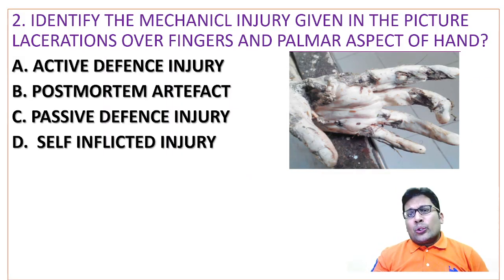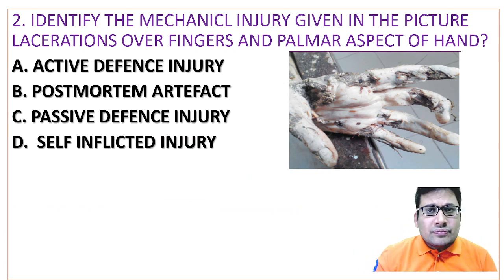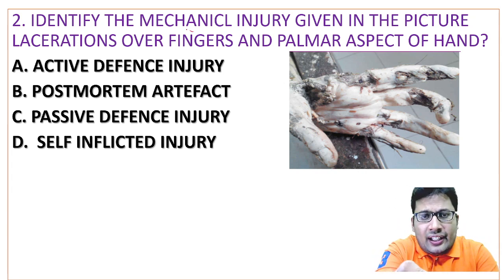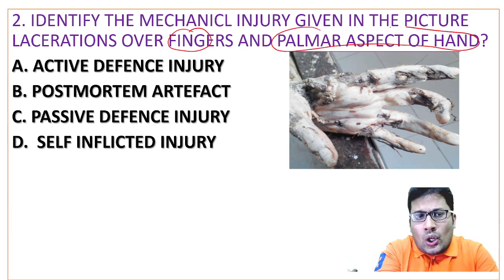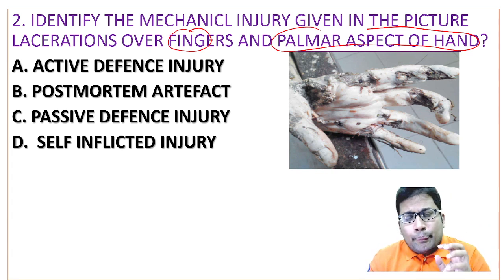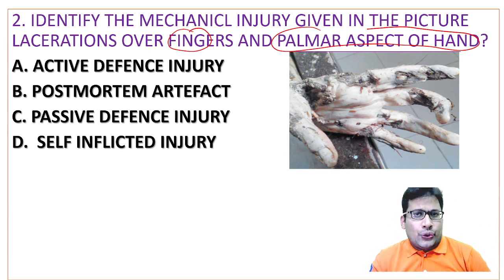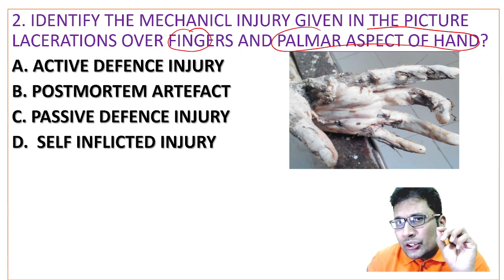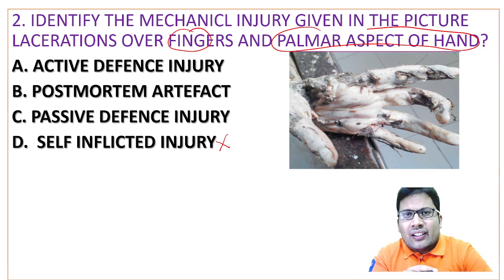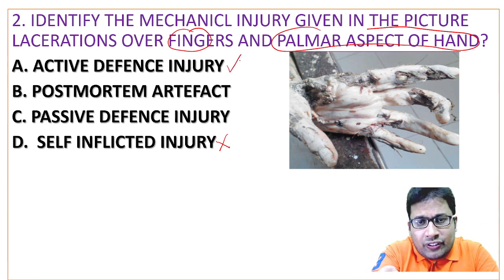Second question was taken from mechanical injury. Identify a mechanical injury given in the picture — the finding is laceration over the fingers and the palmar aspect of the hand. Options are active defense injury, post-mortem artifact, passive defense injury, and self-inflicted injury. Remember, self-inflicted injury was asked in the last INICET exam, but this is not self-inflicted. Since it is seen over the fingers and the palmar aspect of the hand, the answer must be active defense injury.